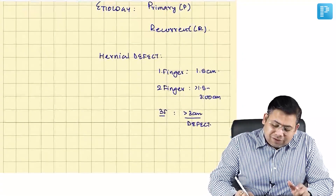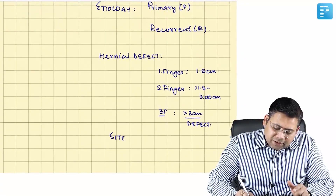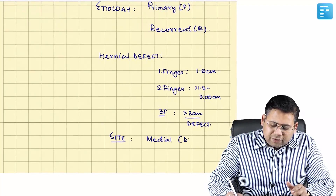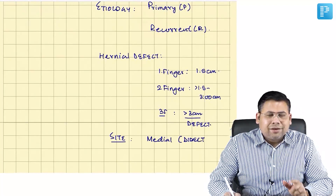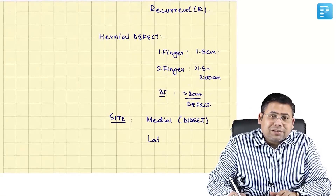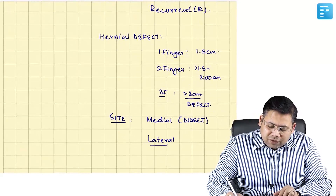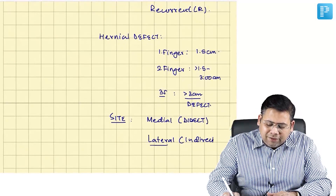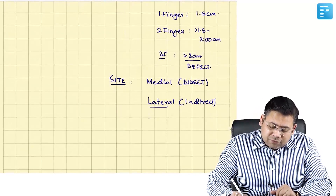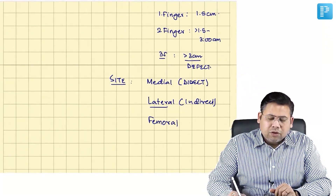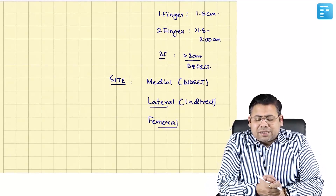S stands for site — where the hernia is. It could be medial if it is a case of direct hernia, lateral if it is a case of indirect hernia, or it could be described as femoral. This is the EHS classification.